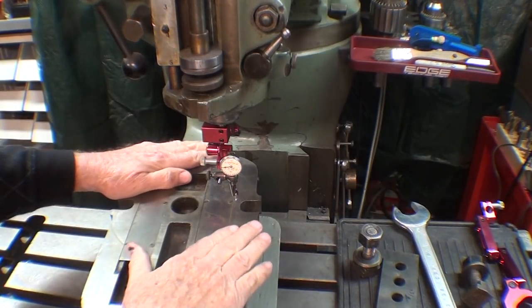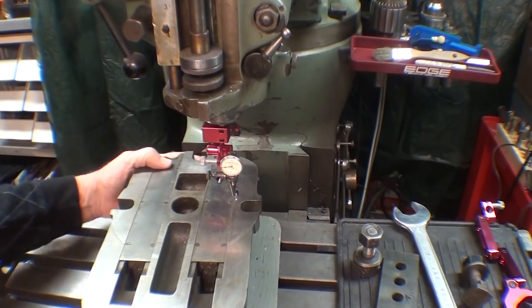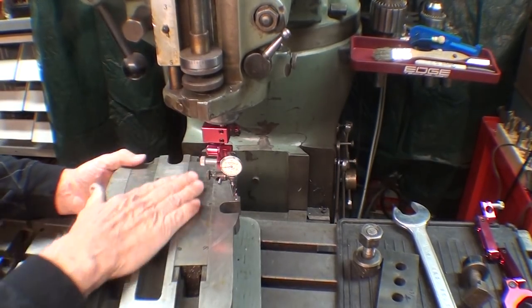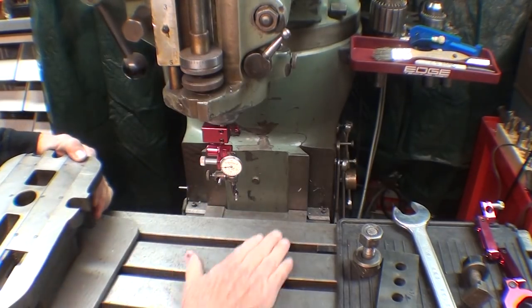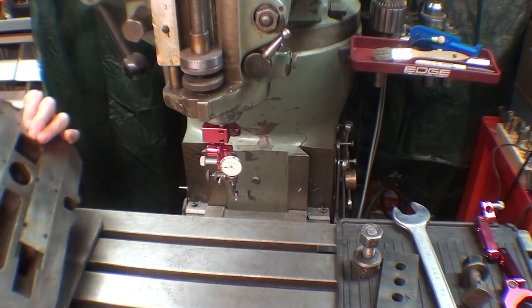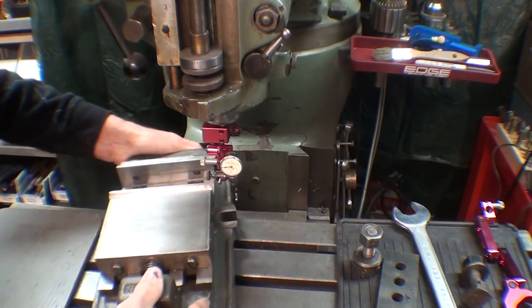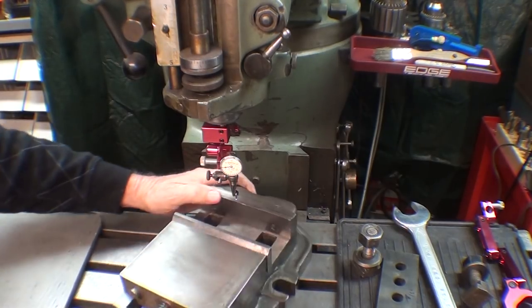This is a five inch Brown and Sharp vise. Notice that it has no provisions for using keys. It's just strictly flat on the bottom. So I'll clean that off real well. Clean the table. And we'll mount this and indicate it. But it will be free to swing.